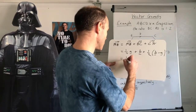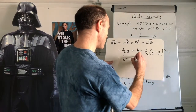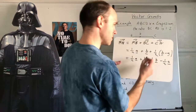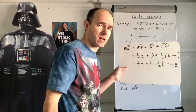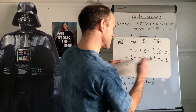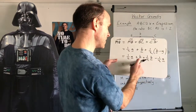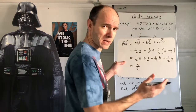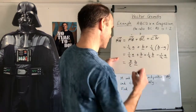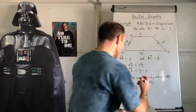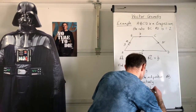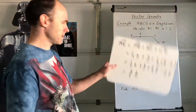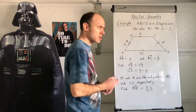So MN equals half a plus b plus half of (b minus a). Expanding: half a plus b plus half b minus half a. The half a terms cancel, and b plus half b gives three over two b. So MN equals three over two b, or one and a half b.